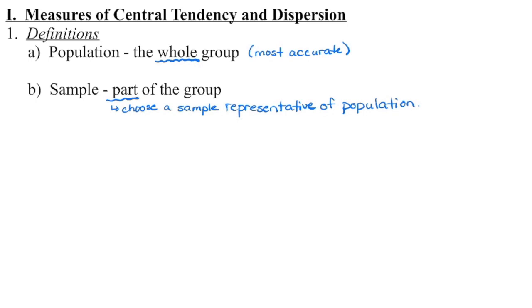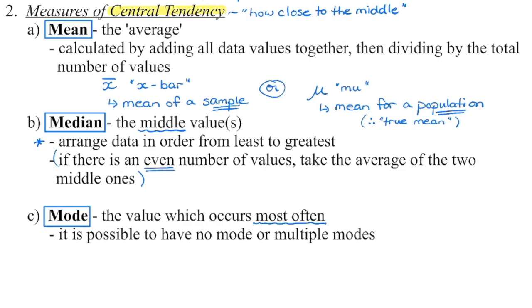We begin by collecting data. If we're able to survey every person in our group or get information from every item in our group, that data will be most accurate, but that's often really expensive and really time-consuming to do. So instead, we take a sample of part of that group, making sure that the sample we choose is representative of our entire population. We then begin to analyze our data.